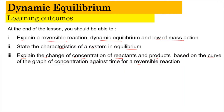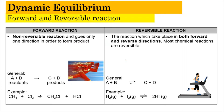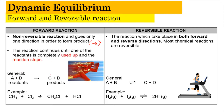Without any further ado, let us start. A forward reaction is basically a non-reversible reaction and goes only in one direction in order to form the product. It is denoted by a single-headed arrow showing the direction going from a reactant towards the product. The reaction is continuous until one of the reactants is completely used up and the reaction stops.